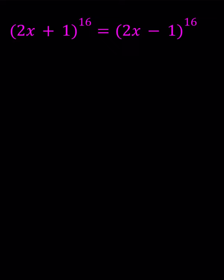If we have a to the 16 equals b to the 16, this implies two things: either a is equal to b, or a is equal to negative b because of the absolute value.